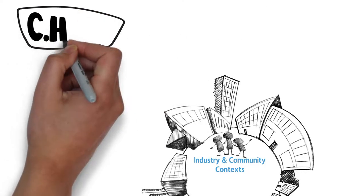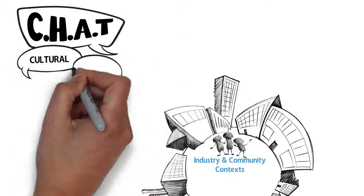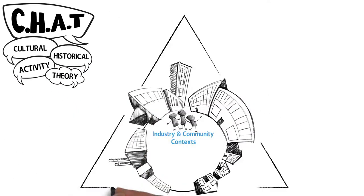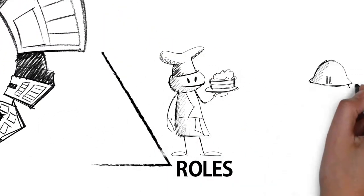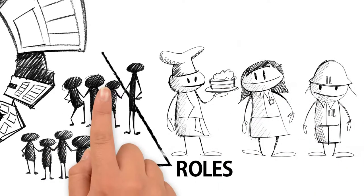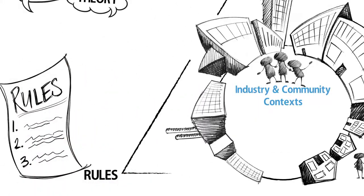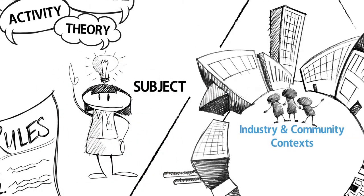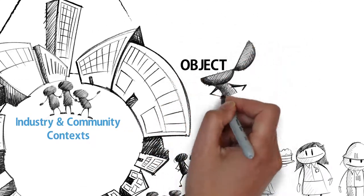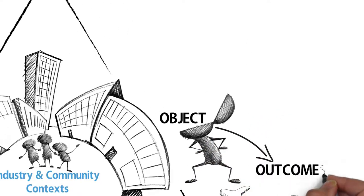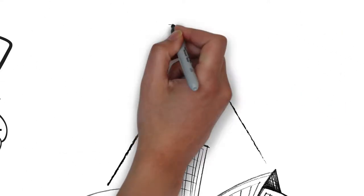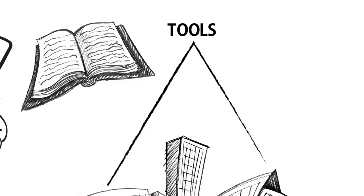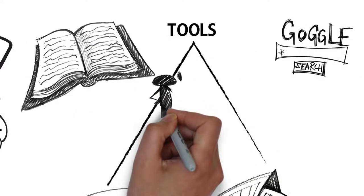You will be introduced to a way of understanding systems through cultural historical activity theory. This means understanding the different roles, division of labour, community members, and rules associated with your activity system. You will better understand your own role and the point or object of your actions and what outcomes you seek. You will understand the importance of mediating artefacts, or put more simply, the tools you use.